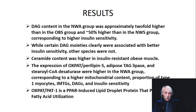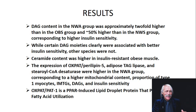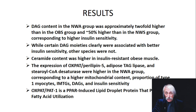Results of the paper: DAG content in the NWA — the athletic people — was approximately twofold higher than in the obese group, and 50% higher in the sedentary group, corresponding to higher insulin sensitivity. So DAG content was twofold higher in the athletes, not lower — that knocked out one of those early theories. It could mean you're peeling off that one fatty acid from triacylglycerol into beta-oxidation, and that steady-state level of DAG is all you're measuring.